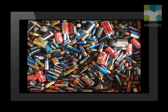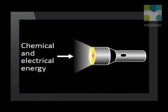Electrochemistry deals with interactions between electrical energy and chemical change, and vice versa. There are many applications of this in everyday life. Batteries, for example, transform chemical energy into electrical energy. A spontaneous chemical reaction in a cell generates an electric current, and the torch is able to provide us with light.